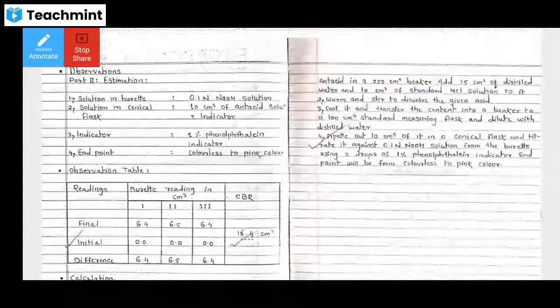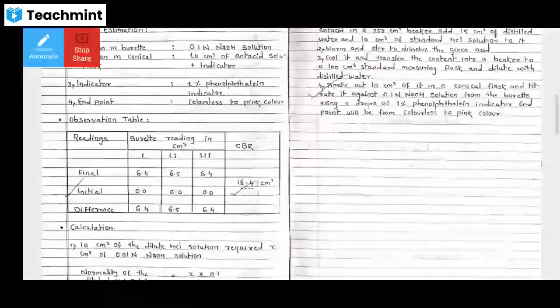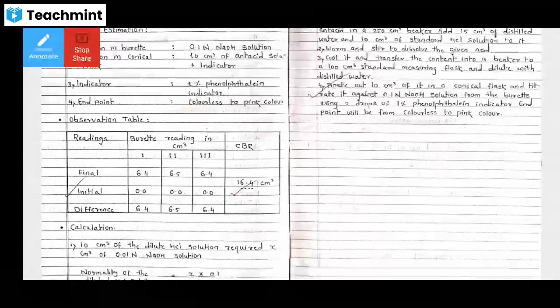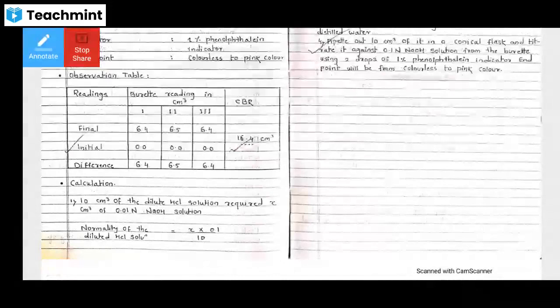How to take the readings: In the beaker, antacid solution is there along with the indicator. In the burette, there is NaOH solution 0.1 normal. Indicator is 1% phenolphthalein. End point: colorless to pink color. These are the chemicals along with the apparatus.